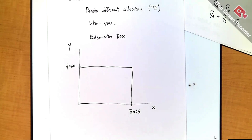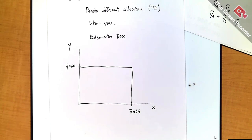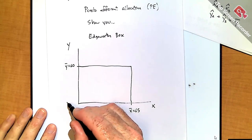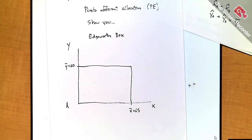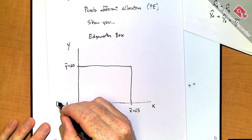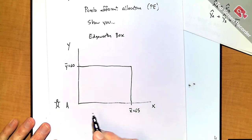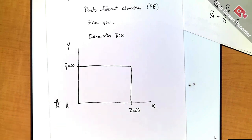Of course there's more to it than that — how could this guy be famous if that was all he did? What he does is use this box to model allocations and trade between A and B. The first step is easy; the second step is a little bit creative. What he does is put one consumer over here — without loss of generality, we'll assign this corner to A. So A is looking at the world from this corner: x-axis and y-axis.